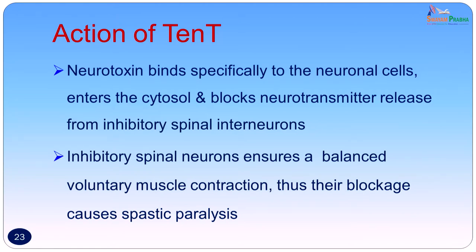The toxin enters the nerve cells in the brainstem and spinal cord, binds specifically to neuronal cells, enters the cytosol, and blocks neurotransmitter release. Normally acetylcholine is released and is responsible for transmission of impulses from higher to lower motor neurons. This release of acetylcholine is inhibited because the sites are bound by the neurotoxin, and thus the inhibitory control of the spinal interneurons is removed. Inhibitory spinal neurons normally ensure balanced voluntary muscle contraction; their blockage causes spastic paralysis — the muscle is not able to relax between contractions.